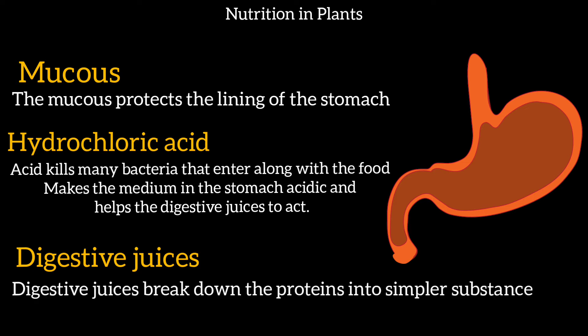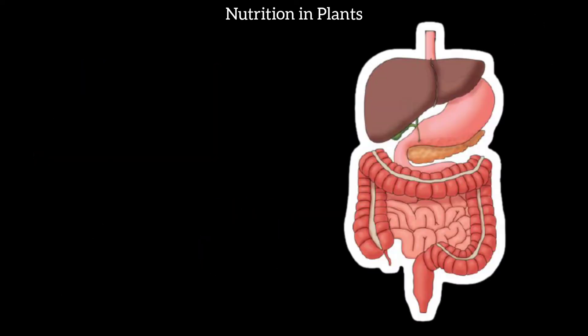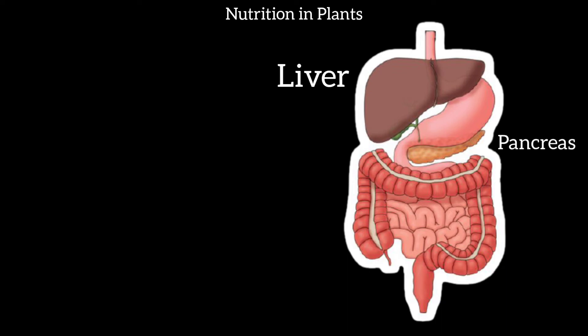The digestive juices work on proteins — they convert proteins into simpler substances. So in our stomach, protein digestion takes place. After the stomach, food moves to the small intestine, which is a coiled pipe about 7.5 metres long.